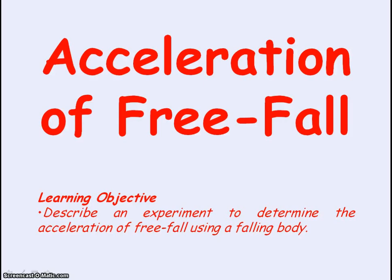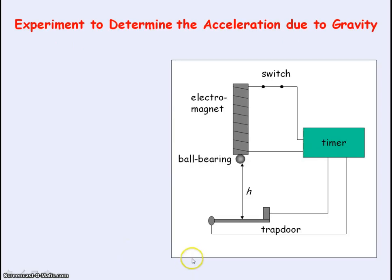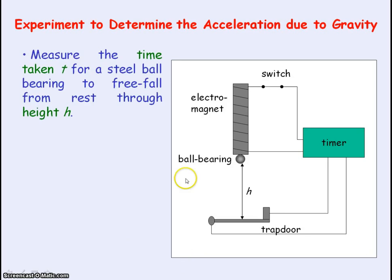We are going to be looking at experiments to determine the acceleration of free fall. One experimental setup is shown here. The time taken for a steel ball bearing to free fall from rest through height h is determined. Height h is measured with a ruler from the bottom of the steel ball bearing to the trap door.